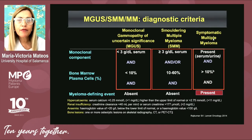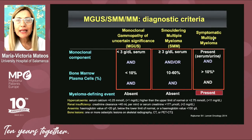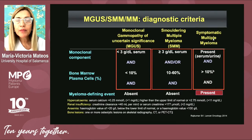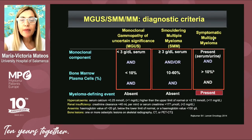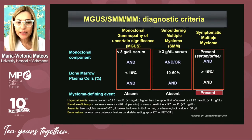Smoldering myeloma is defined by the presence of a monoclonal component higher than three grams per deciliter in serum, and the plasma cell bone marrow infiltration is between 10 and 60%. Again, there is not any myeloma defining event. This is the main difference from MGUS and smoldering, because multiple myeloma is characterized by the presence of myeloma defining events and clinical symptomatology.